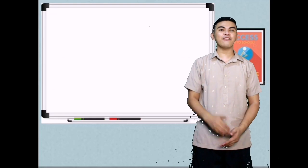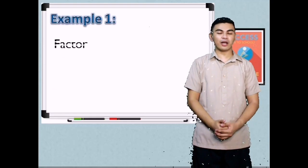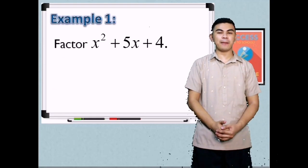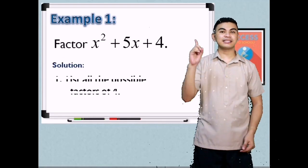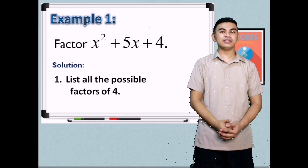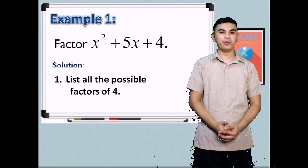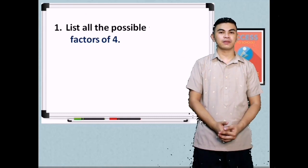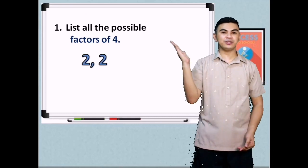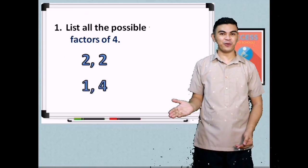So let's have example 1. Factor x squared plus 5x plus 4. Let's have the solution. Step 1, list all the possible factors of 4 which is our last term. What are the factors of 4? We have 2 times 2 and 1 times 4.